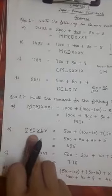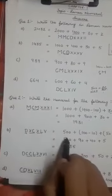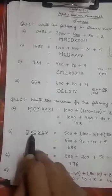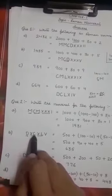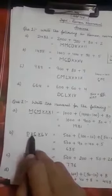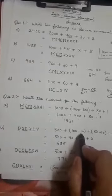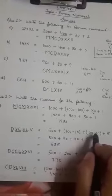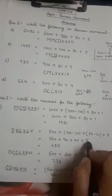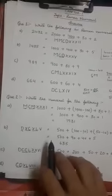Next. DXCXLV. First I will write the value for D. It is 500. XC, XC means I have to subtract 10 from 100. As it is on the left of C. So 100 minus 10, 90. XL means 50 minus 10. That is 40 plus 5. Then we will add together. We will get 635.